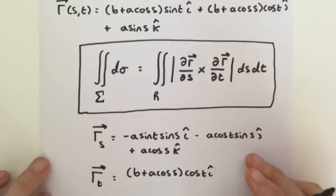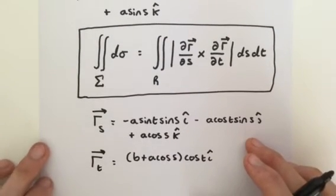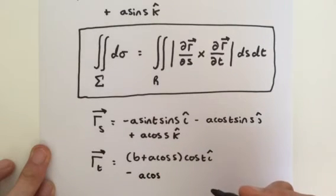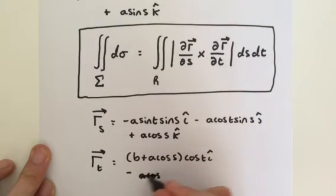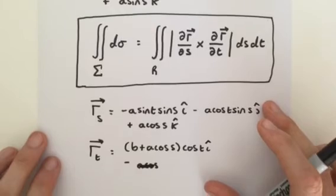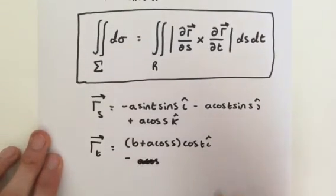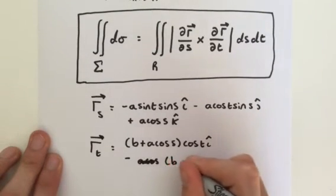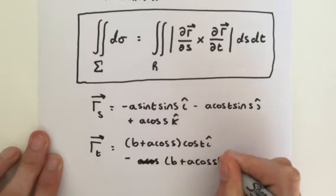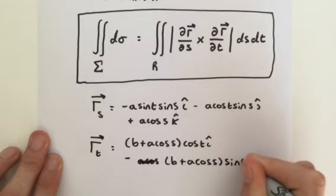we have to minus a cosine of a, oh hold on a minute, sorry, I'm doing the wrong thing here, aren't I? Yes. Differentiating with respect to t, so actually it's minus b plus a cosine of s times the sine of t times j.